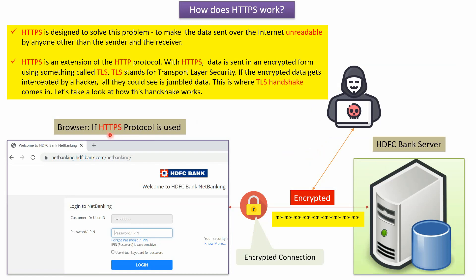Instead of HTTP protocol, if you are using HTTPS protocol, then whatever data is sent from the HDFC bank website to the HDFC bank server is encrypted, and this connection is an encrypted connection. Even if a hacker intercepts this data, what the hacker will see is jumbled data — they cannot make out what the actual data is. With HTTPS, data sent over the internet is unreadable by anyone other than the sender and the receiver.